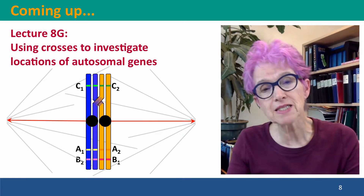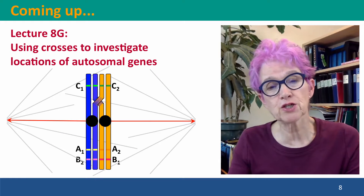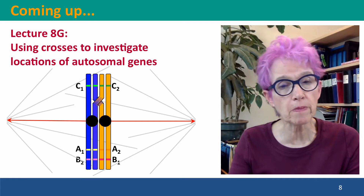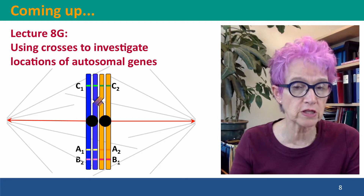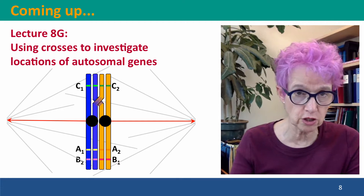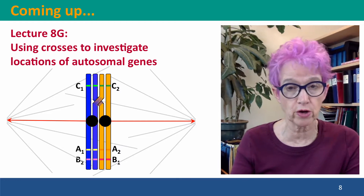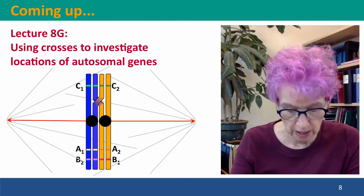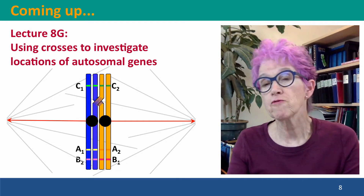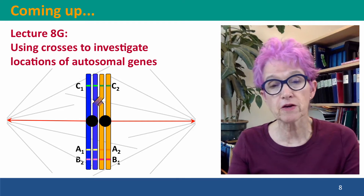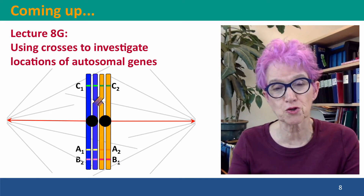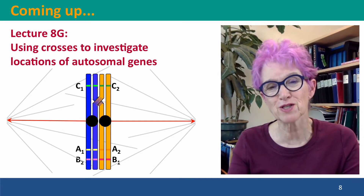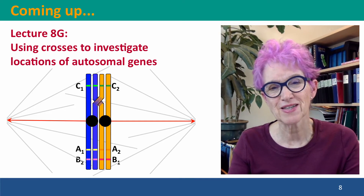Coming up next, Lecture 8g, we're going to talk about using crosses to investigate the locations of genes on autosomes by interpreting the effects of crossovers. I hope to see you there.